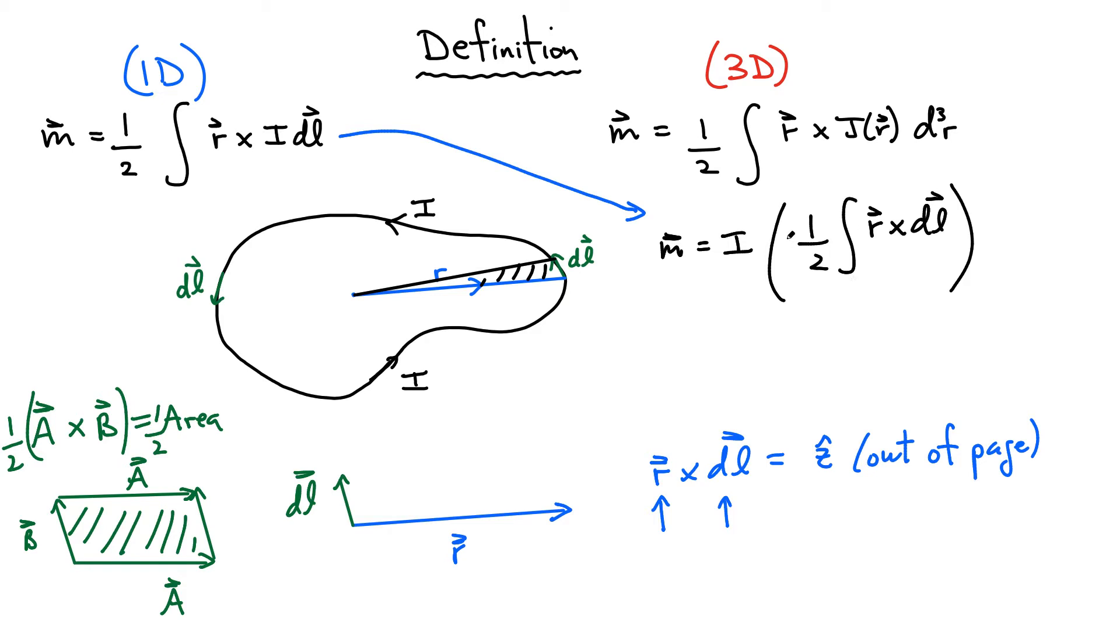And what I'm doing now is I'm integrating all of those R cross DLs. And again, putting the one half in the front. So that means this definition of magnetic moment simply boils down to I multiplied by the area of the loop. I'll just call that A. And the direction we know, the direction is out of the page. So what we're going to do and what follows here, we're basically going to apply this formula, our 1D formula, which boils down to this equation. And we're going to show you how to apply this equation to those three spinning objects.